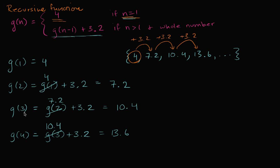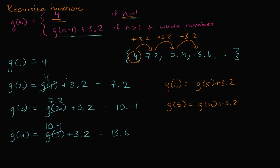With this example we're seeing how a recursive function can be used to define an actual sequence. You could go the other way too — if I said what's g of six, you'd say that's going to be g of five plus 3.2. Then you'd have to figure out g of five, which is g of four plus 3.2. We've already figured out g of four is 13.6, so g of five is 16.8, and g of six is 20. You could start at g of six and keep backing up all the way to g of one — recurse back to your base case — and fill in all the blanks.